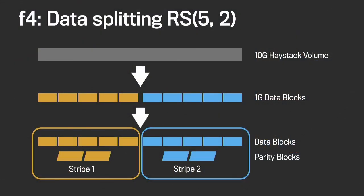In F4 we use Reed-Solomon encoding to store the data. How is data moved from Haystack to F4? For this explanation I'll use Reed-Solomon 5-to-2. Assume we have a 10 GB Haystack volume. When moving the data into F4, we split the data into 1 GB data blocks. We group them together and for each set of five data blocks we create two parity blocks. Thus from the 10 GB Haystack volume we get two stripes, and each stripe has seven blocks — five data blocks and two parity blocks.